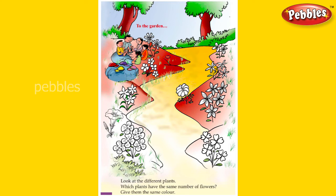Five children were playing in the garden. There are so many flowers and plants on both sides — I think it is a river on both sides with so many plants. You can color the flowers which have the same number of flowers on both sides. Take your crayons and give color.